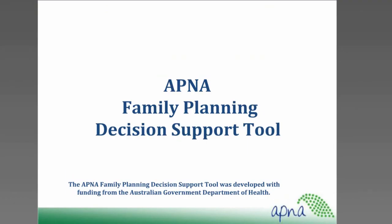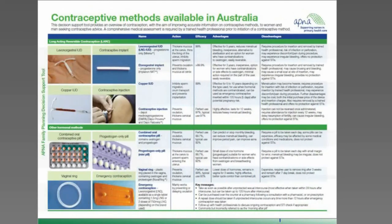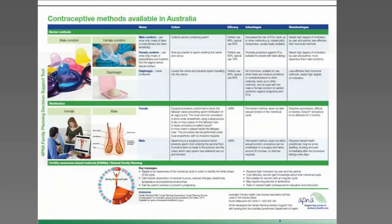I am delighted to introduce you through this webinar to a new family planning decision support tool for primary healthcare nurses in Australia, developed by APNA with funding from the Australian government. Australia has one of the highest rates of unplanned pregnancy of Western countries, with an estimated one in two pregnancies being unplanned or mistimed and one in three pregnancies ending in an induced abortion. Despite the increasing availability of contraceptive methods over recent decades, these statistics have essentially remained unchanged.